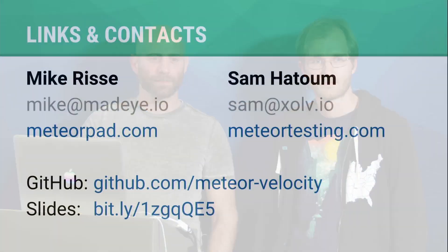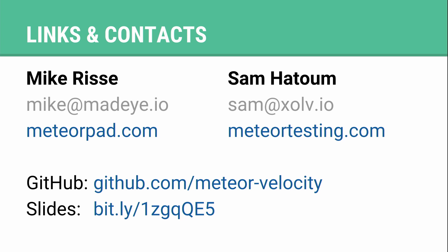Thank you so much, Sam and Mike. If you're watching this presentation online through the live stream, you can tweet in your questions using hashtag DevShot. Does anyone in the room have questions? So what's the current state of thinking between tiny tests and Velocity and how they work together or conflict?